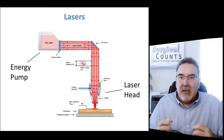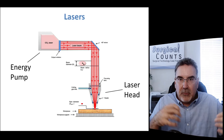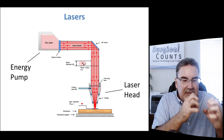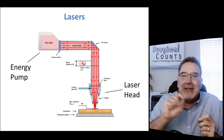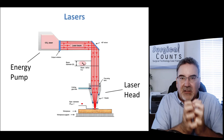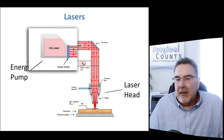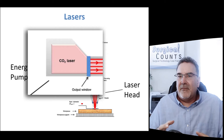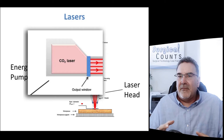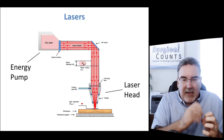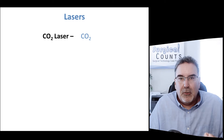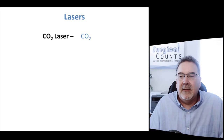To get light out of a laser, we put some material in the energy pump and run a current through it to get it excited. When we do this, it emits light — it sends off photons. Because it's all one kind of material, it always emits exactly the same wavelength. Looking at a CO2 laser, the material we put inside the energy pump is CO2, carbon dioxide. So a CO2 laser is named after the material we excite to send out the light.